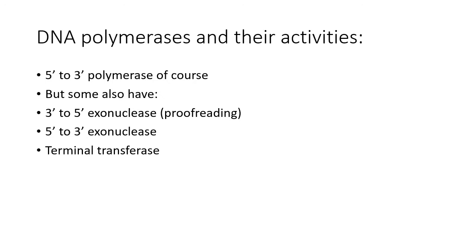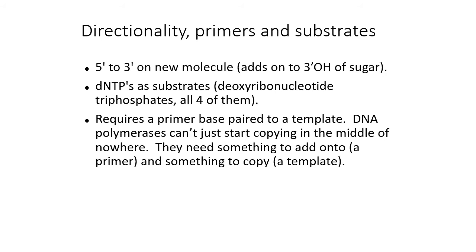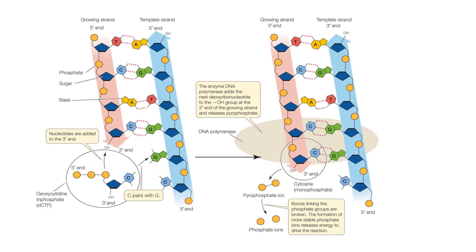They can have 3' to 5' exonuclease activity, 5' to 3' exonuclease activity, and terminal transferase activity — and some polymerases have different combinations of these. The DNA strands are anti-parallel and replicated in a 5' to 3' direction relative to the elongating strand. DNA polymerases use deoxyribonucleotide triphosphates as substrates and require a primer base-paired to a template. DNA polymerases can't just start copying in the middle of nowhere — they need to add on to a pre-existing molecule base-paired to a template.